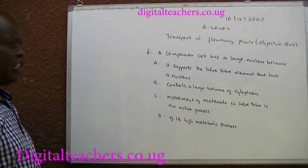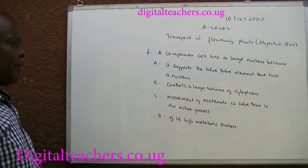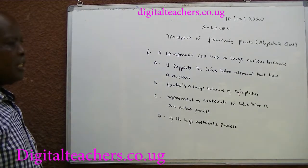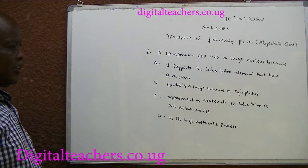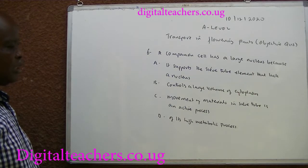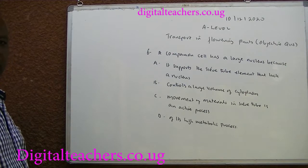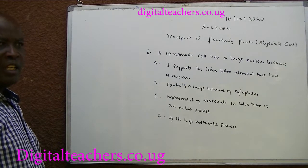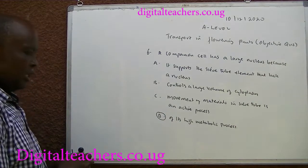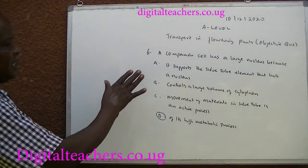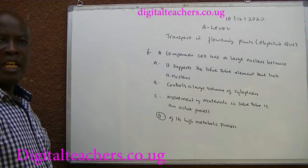Number 6. A companion cell has a large nucleus because A. It supports the sieve tube elements that lack a nucleus. B. It controls a large volume of cytoplasm. C. Movement of material in the sieve tube is an active process. D. Because of its high metabolic processes. You can pause and answer. The answer is D. The nucleus is for metabolic processes. There is no evidence that companion cell supports sieve elements.